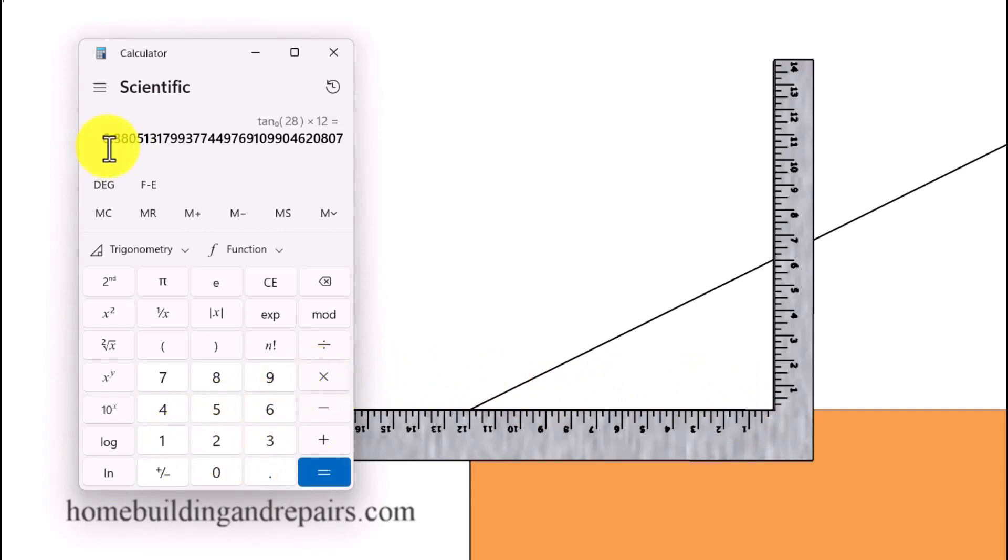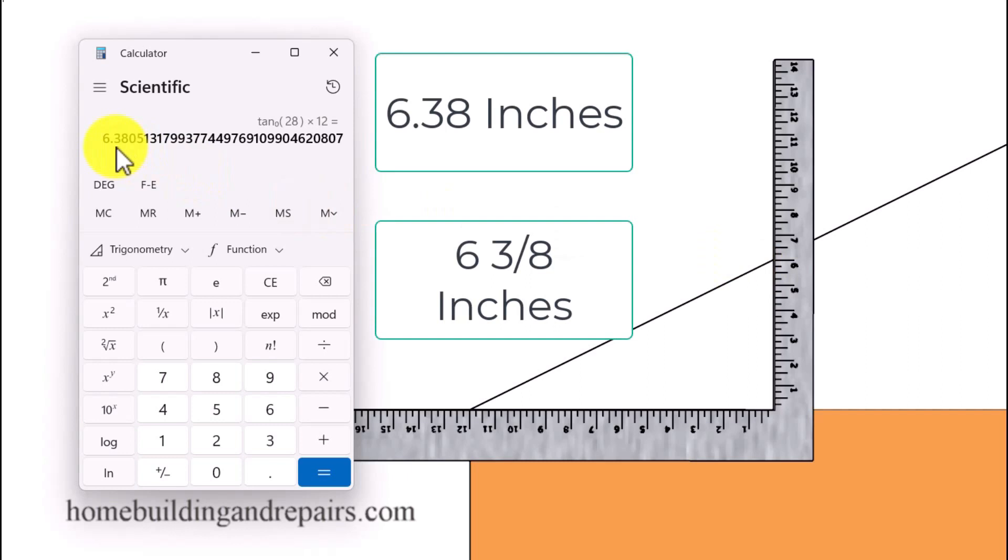And that's going to provide us with a 6.38 measurement. So instead of using 6 on the framing square I'm going to use 6.38 as a decimal or convert this to a fraction which would be just a little bit over 6 and 3 eighths inches.